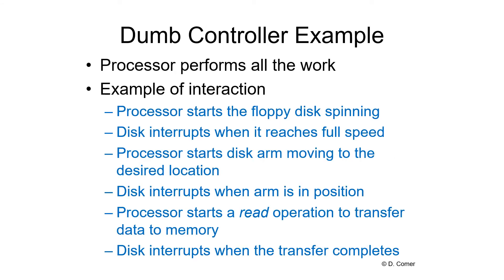Some controllers do not provide a lot of support for controlling the device — all they do is send commands from the CPU to the device. Below is an example of a floppy disk controller. We don't use floppy disks much anymore. With this dumb controller, the CPU tells the floppy drive to start spinning. The floppy drive would stop spinning when not in use, so it starts up. Once it starts spinning at the proper speed, the I/O controller interrupts the processor. Then the processor tells the controller to move the disk read arm to the proper location. The controller moves the arm and interrupts the CPU when in position. The processor then tells it to start reading and transfer data into memory. Once data has been transferred, the disk interrupts the CPU to signal the transfer is complete.